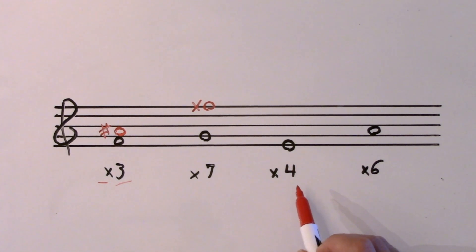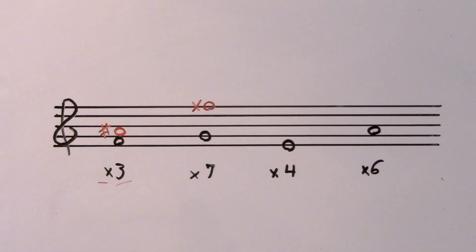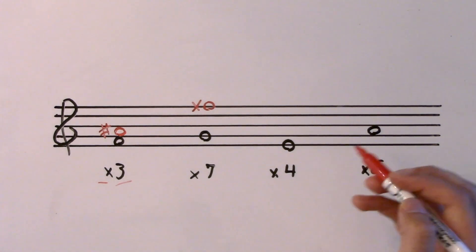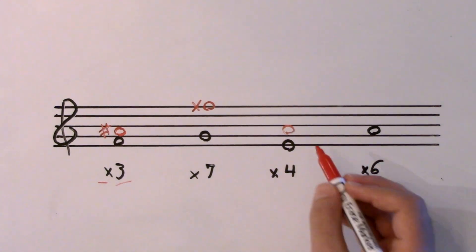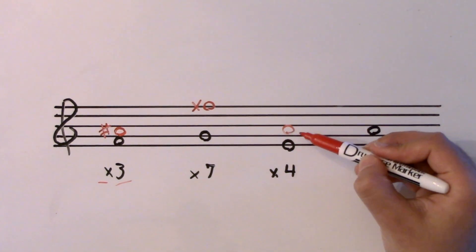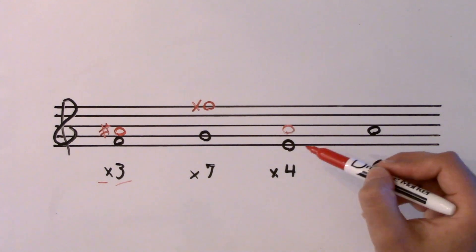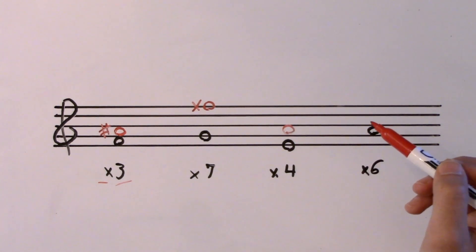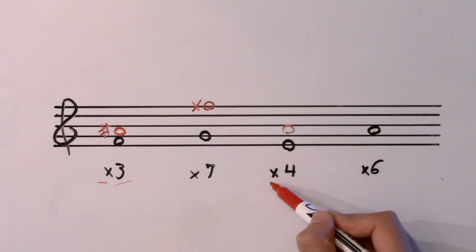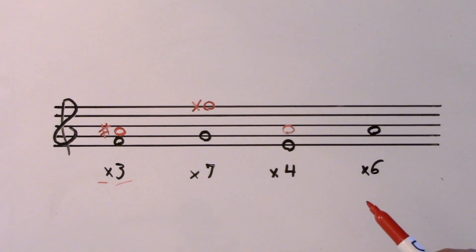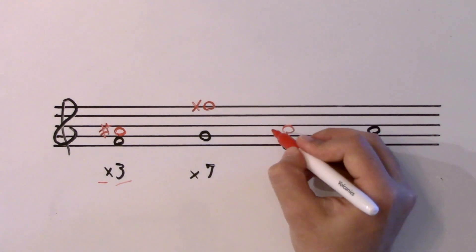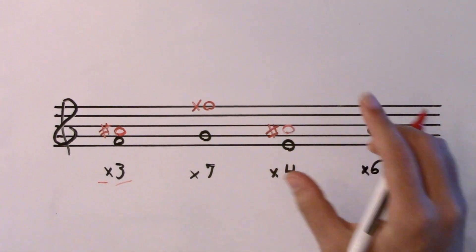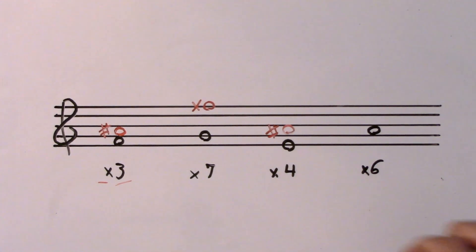Augmented fourth. Remember, fourths can only be perfect — there's no such thing as a major fourth or a minor fourth. A fourth above E is the note A. This is a perfect fourth because A is the subdominant of E. To make it augmented, I need to increase the space. Adding a sharp makes it one semitone bigger — that is an augmented fourth. Perfect fourths go immediately to augmented.